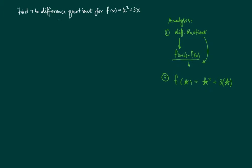The analysis goes something like this. The difference quotient is defined as f(x+h) minus f(x) divided by h. And the second point is that f, or whatever is defined, is taken to the form of x squared plus 3x.